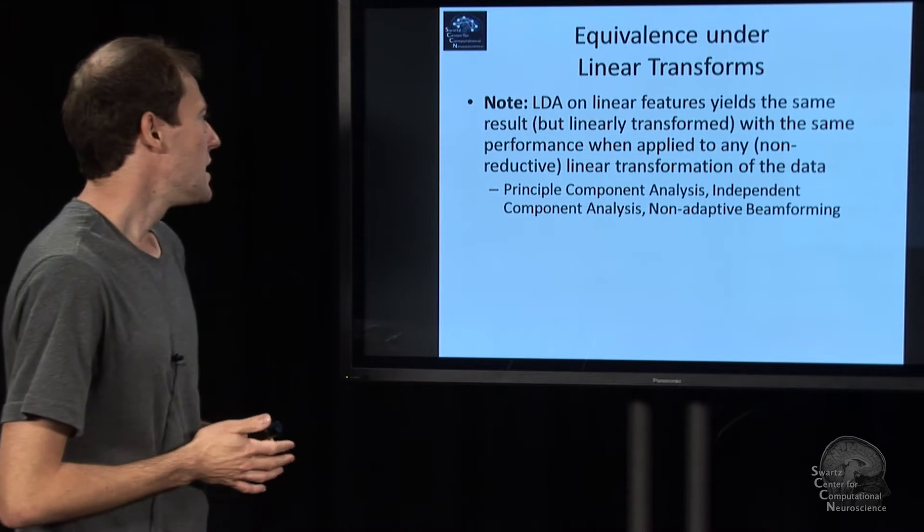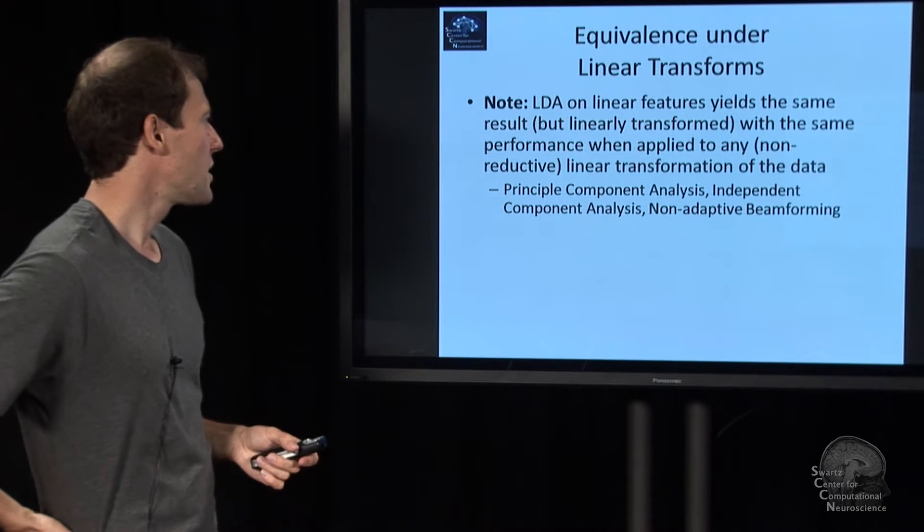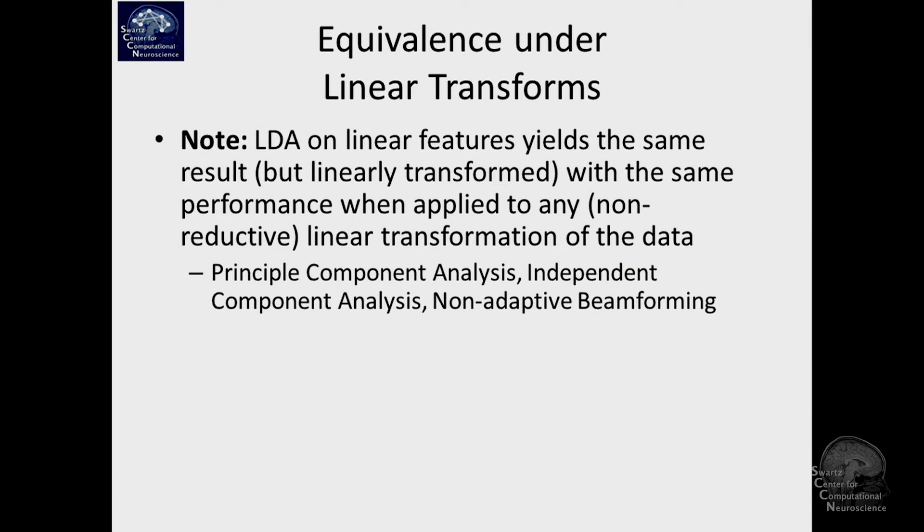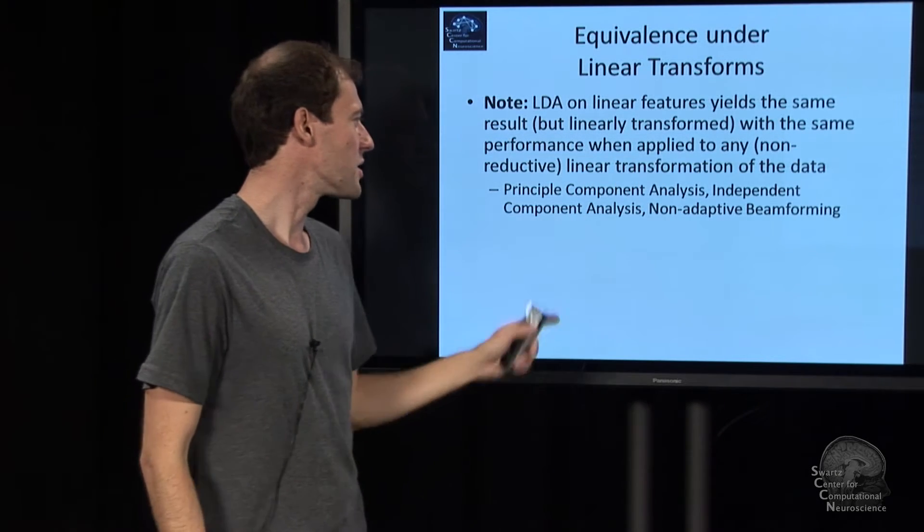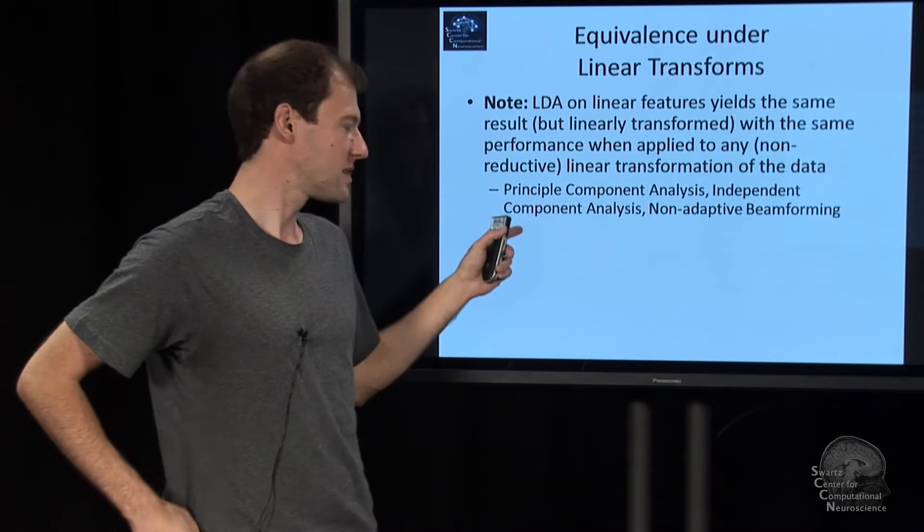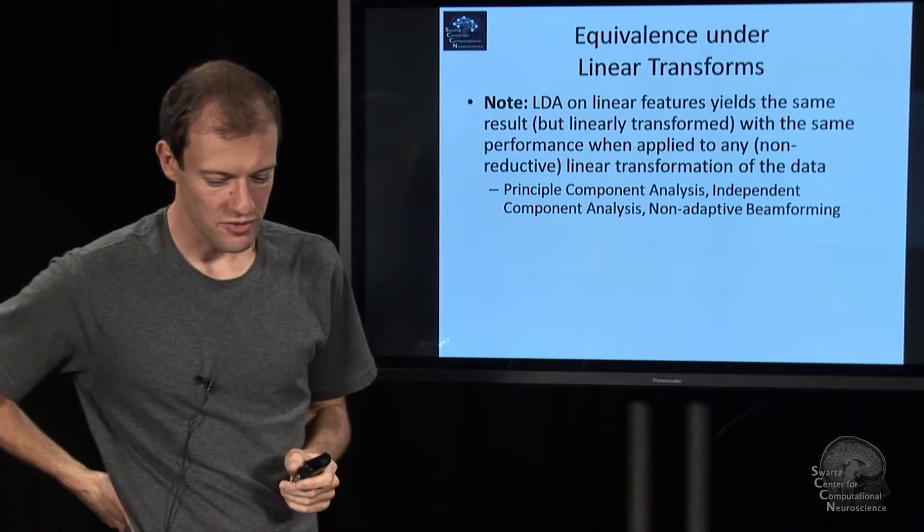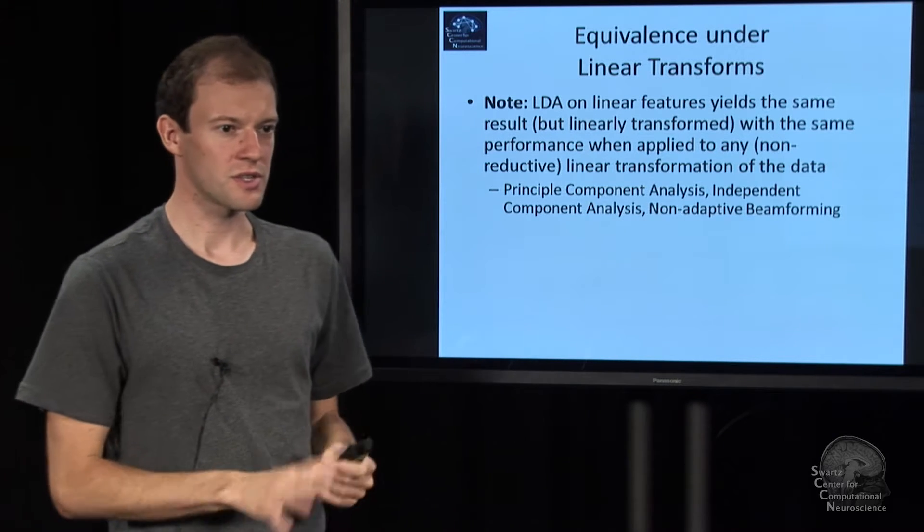So the first little consideration is this: LDA gives you basically, if you apply it to linear filters, the same effective result as if you had applied it to linearly transformed data. So if you had swizzled the channels, for example, or rescaled them or whatever, you would have gotten the same performance because LDA would have just learned different weights. So if you apply this to principal components of the data or independent components or whatever, you still get basically the same result as long as you don't throw information away. So that's just a feature of this whole process being linear. If you're looking at something nonlinear, like oscillations, that absolutely doesn't hold anymore.